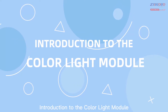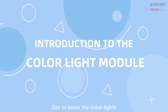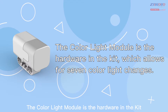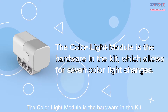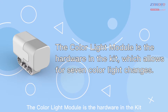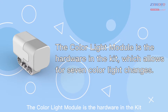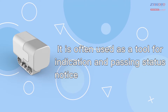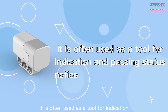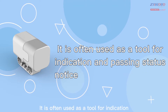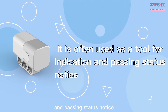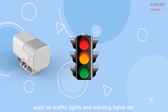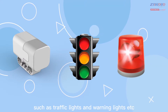Introduction to the Color Light Module. The color light module is the hardware included in the Intelligent Storm Kit, which allows for 7 color light changes. It is often used as a tool for indication and passing status notice, such as traffic lights and warning lights, etc.